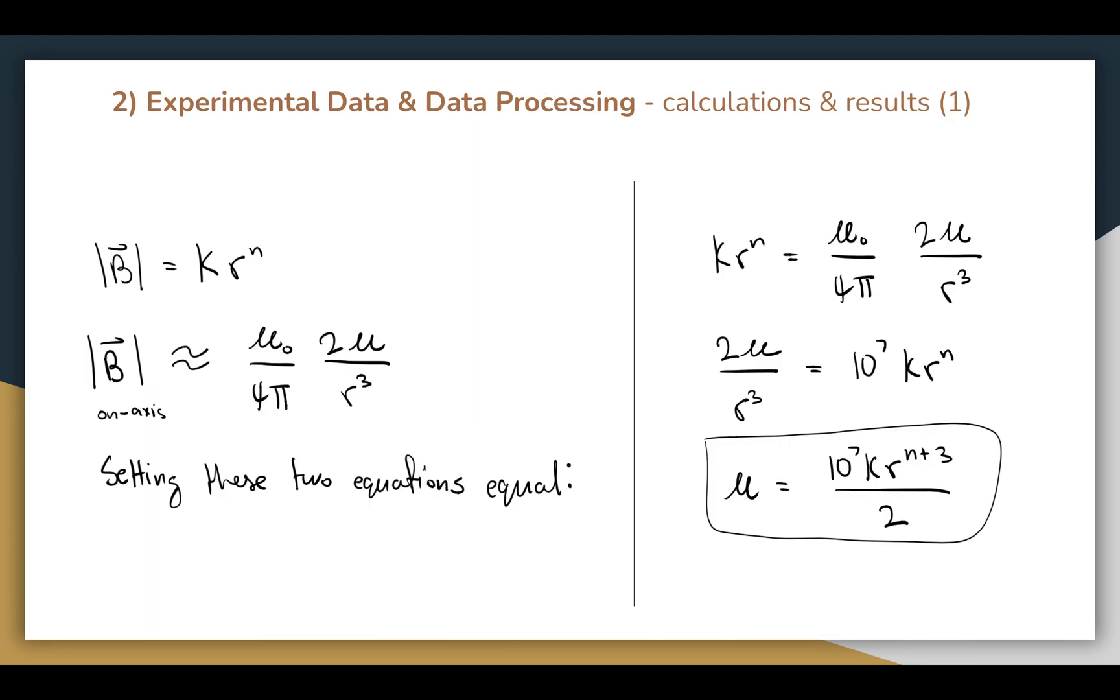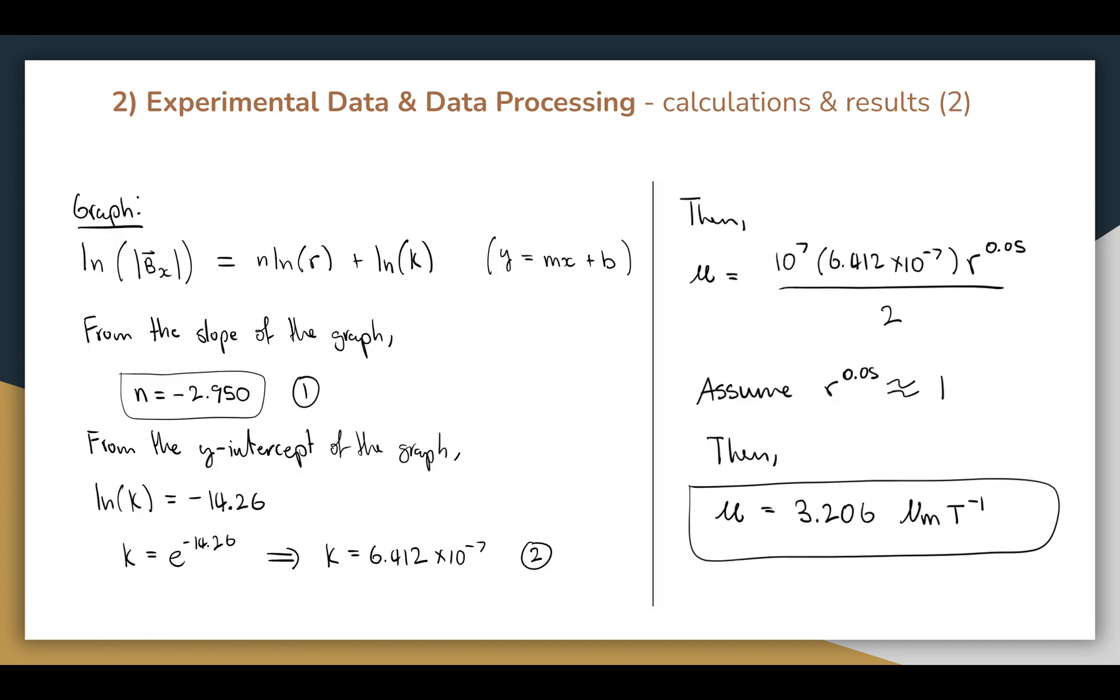So here, I've set the first two equations shown to the left equal to each other in order to find a symbolic solution for mu circled to the right. I then pulled data from my graph as shown in these calculations.